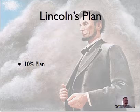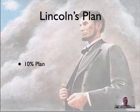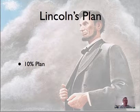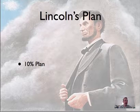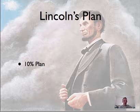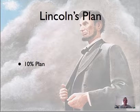Lincoln used this to put union governors in place in liberated states such as Tennessee. In Lincoln's opinion, it's the responsibility of the president to take care of these Confederate states and bring them back into the Union — because of the president's responsibility to grant pardons and his belief that they never really left the Union.